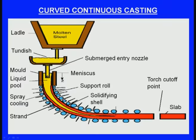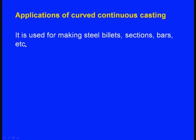By the time it comes out, it is totally solidified, and somewhere here it will be cut using a torch or a saw. Likewise, the solidified bar is periodically cut or cut at the desired position. This is the principle of curved continuous casting. Applications: it is used for making steel billets, sections, bars, and so on.